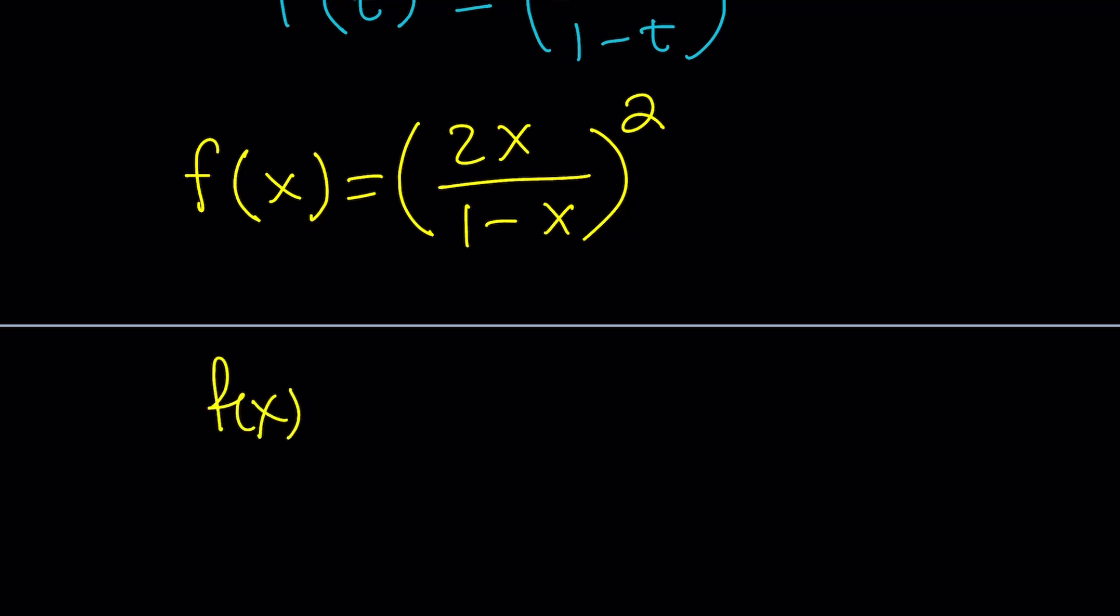Of course, if you want to go fancy and kind of square it like this and then square that, you're going to get 1 minus 2x plus x squared. That's going to be probably a little nicer. Make sense? Okay, great.